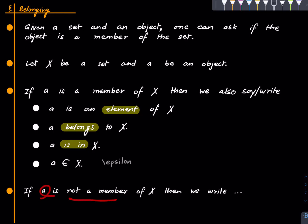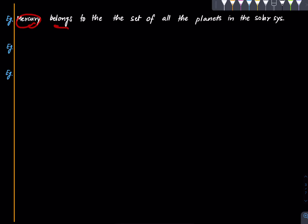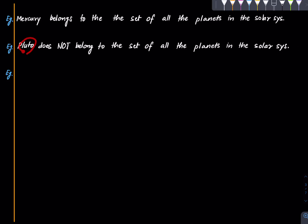If a is not a member of x — not an element of x — then we write a ∉ x, which is just the ∈ symbol with a slash through it. These are convenient notations; rather than saying things in words when writing a proof, this is much quicker. For example: Mercury belongs to the set of all planets in the solar system; Pluto does not belong to the set of all planets in the solar system. In notation: 1 is an element of {1, 2, 3}, and 4 is not an element of {1, 2, 3}.